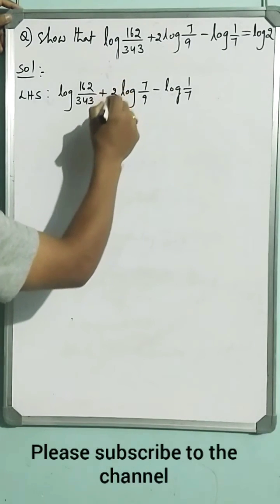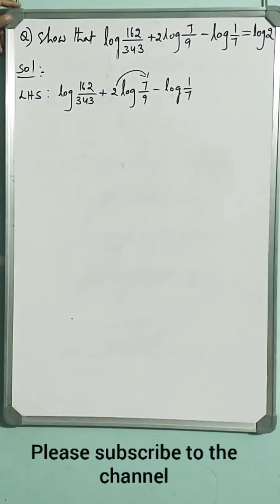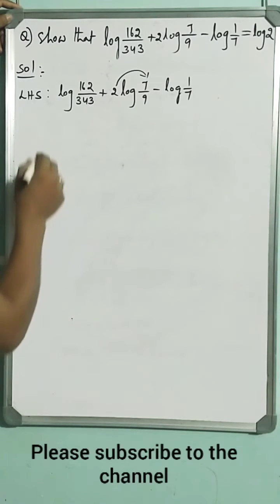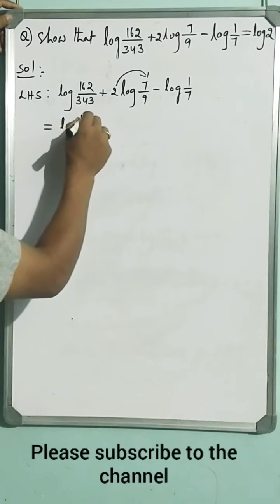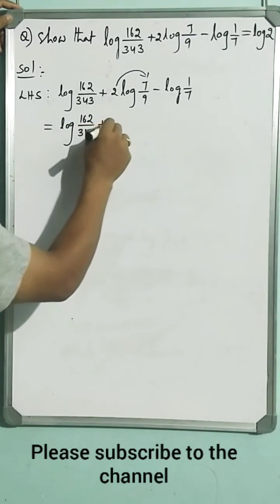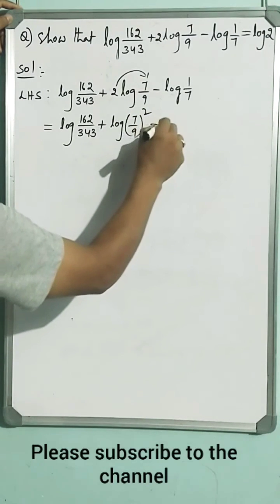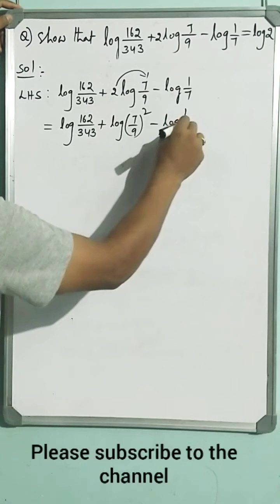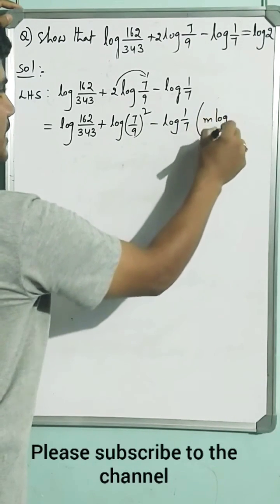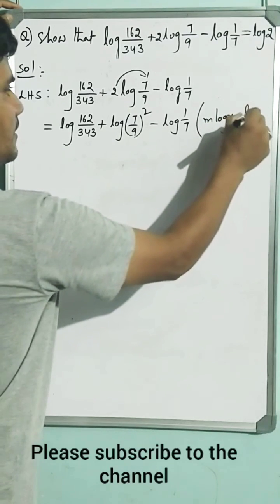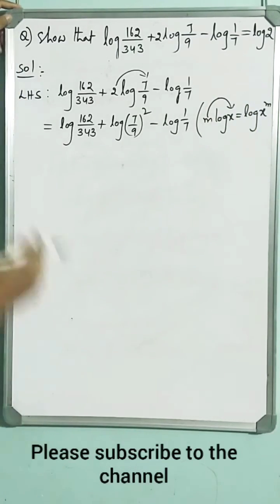Here in the first step we will transpose this coefficient into exponent place. Then it becomes log 162 by 343 plus log 7 by 9 whole square minus log 1 by 7. Here what I have used: M log x can be written as log x to the power of M. This coefficient becomes exponent.